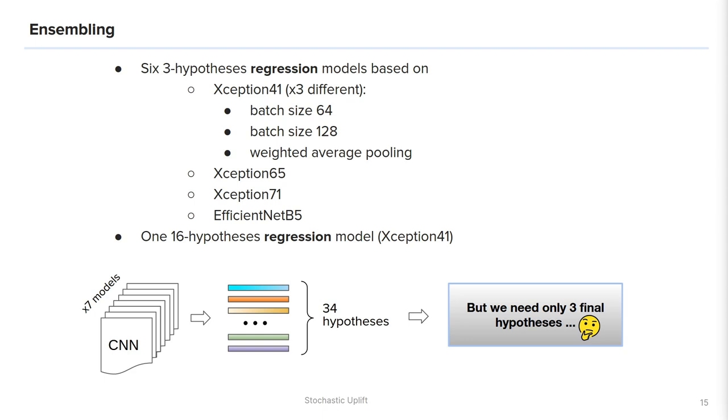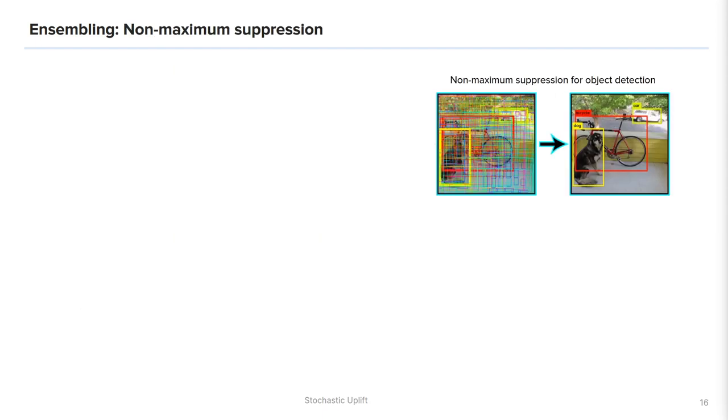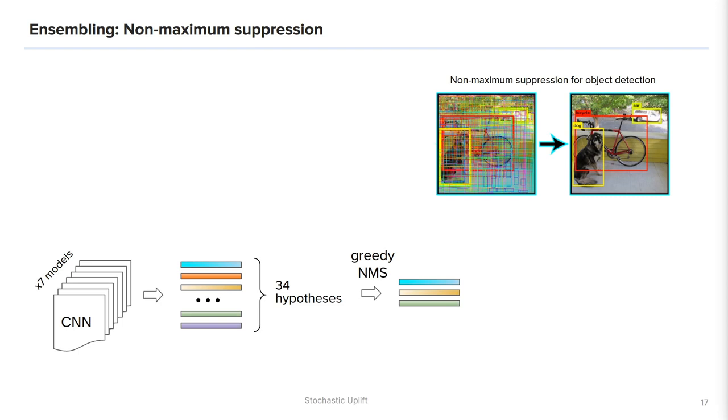And one of the most challenging parts of this competition is how to combine multiple hypotheses to produce only three required for the evaluation. Obviously it is beneficial to select very diverse proposals as it increases the chance that one of them will be close to the ground truth. One can see that such a problem statement is closely related to a well-known non-maximum suppression method widely used in object detection pipelines, where multiple spurious detections have to be filtered. The trivial way to do non-maximum suppression is a greedy algorithm. We iteratively select the most confident detections while suppressing very similar but less confident ones. We can apply similar greedy approach to our task.